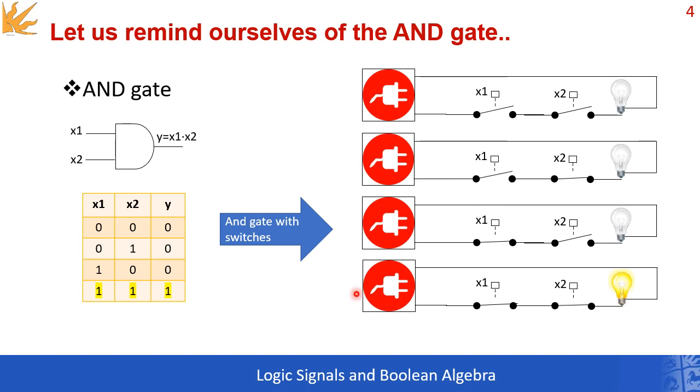If you use switches, you understand it easily. AND is essentially equivalent to a series of switches. Both need to be one for the circuit to be closed and the output to be one.